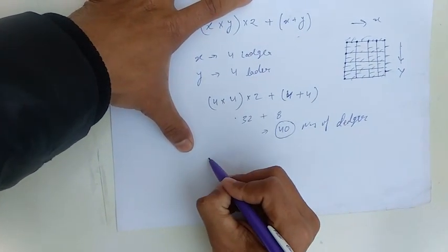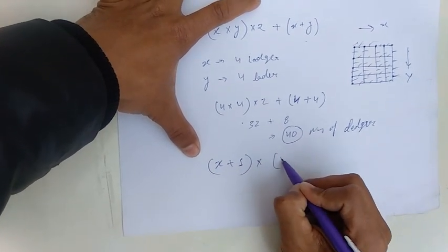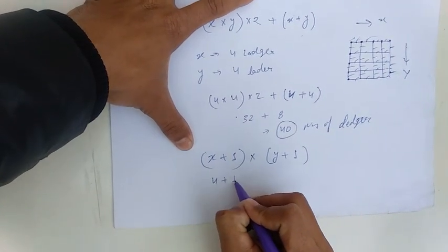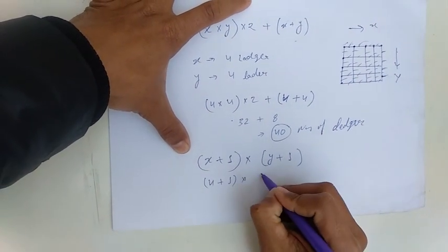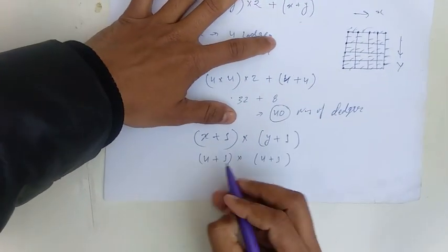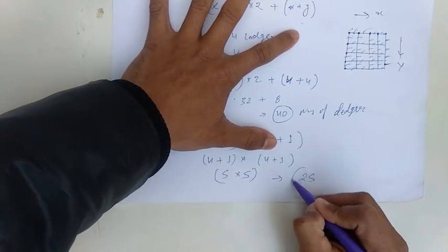Now for the calculation of standard, we have to do x plus 1 into y plus 1. Number of ledgers 4 plus 1 into number of ledgers 4 plus 1. 5 into 5. So number of standard will be 25.